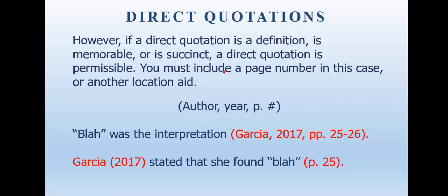Let's talk direct quotations, because remember I talked about paraphrasing and said there are only very specific times when you will use a direct quotation in APA 7. So if a direct quotation is a definition, is memorable, or succinct — or if you are really wordsmithing, disputing some very particular phraseology of the author — then you can use a direct quotation. A direct quotation must include a page number. You're only rarely going to use it, but when you do, they want a page number.